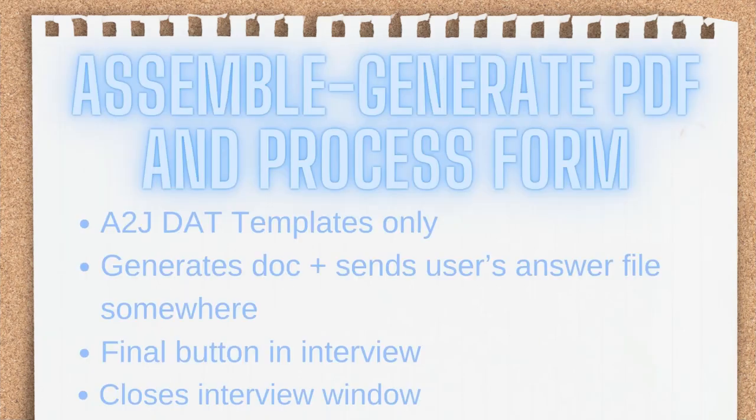The fifth exiting option is assemble generate PDF and process form. This again is only to be used with A to J DAT templates and not HotDocs templates. Similar to success process form, this generates a document and sends the user's answer file onto a server to be saved.